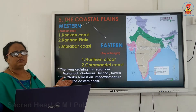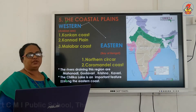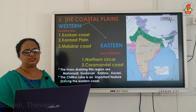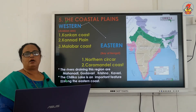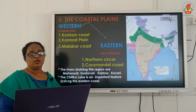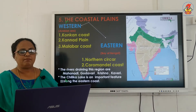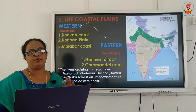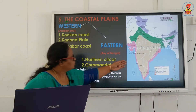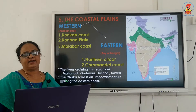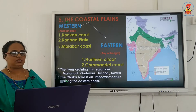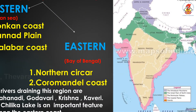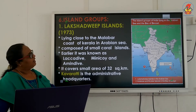Four important rivers drain the eastern coastal region: Mahanadi, Godavari, Krishna, and Kaveri. Lake Chilika is another important feature along the eastern coast. These are the key features of the coastal plains.